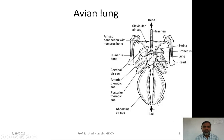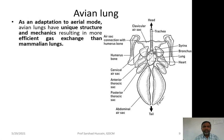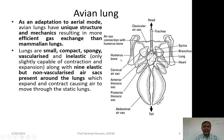Avian lungs represent an adaptation to the aerial mode of life. Birds have developed many structures to reduce body weight for flight and to have more air inside the body. A unique structure and mechanism in avian lungs is an adaptation for aerial flight, and these lungs are supposed to be more efficient compared to mammalian lungs.